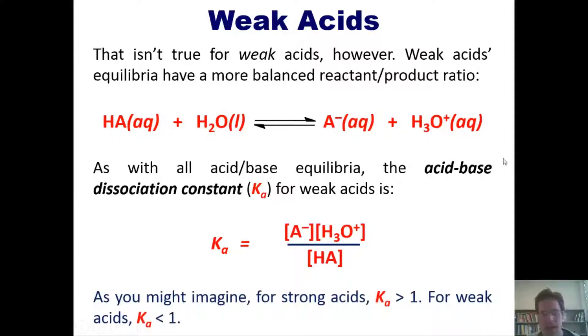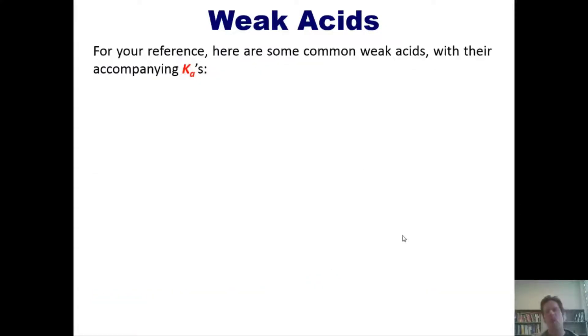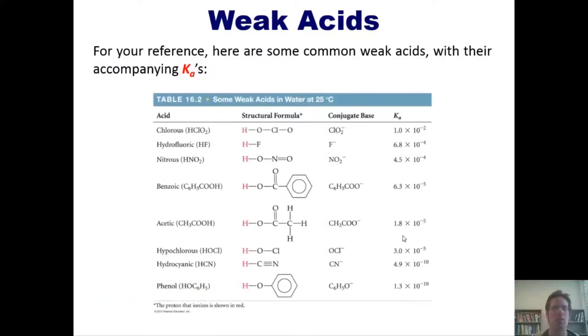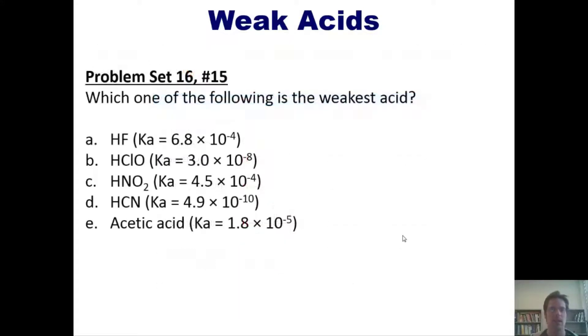Now, as you might imagine, for strong acids, Ka is larger than one. And the reason is because you have virtually all product and very, very tiny amount of reactant. While, for weak acids, Ka will be less than one because it will be the reverse. Now, for your reference, here are some common weak acids with their accompanying Ka's. You're welcome, of course, to pause the video and look at the Ka values. You'll notice that for all of these weak acids, the Ka values are less than one. That takes us to a question. Which of the following is the weakest acid? As you might guess, and in connection with what I've talked about earlier, the lower the Ka value, the weaker the acid. Hence, I'll let you do this one on your own.